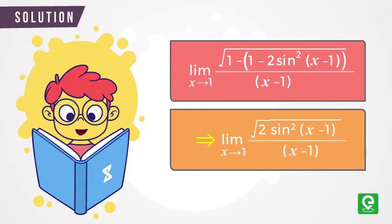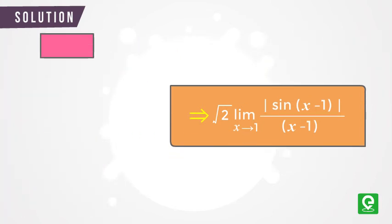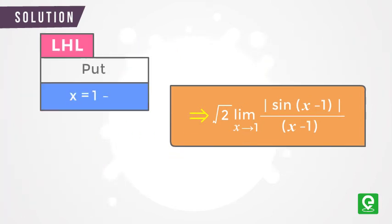Since constants don't play a role in deciding the limiting value of a function, we can consider the constant out of the limits. Hence our equation simplifies to √2 limit |sin(x - 1)| / (x - 1) as x approaches 1. For left-hand limit, let's put x = 1 - h where h > 0.